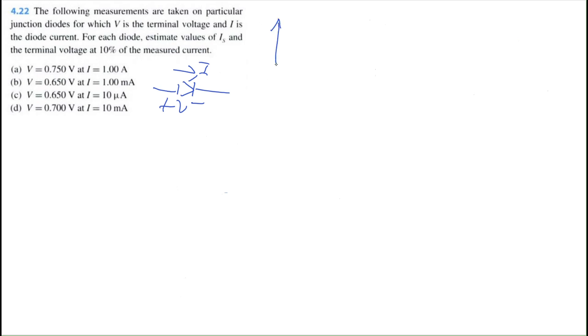We have a diode driving some current I with a terminal voltage V. This problem is really trying to demonstrate the current-to-voltage relationship for a diode. Typically at around 0.7 volts, a diode will start to draw a little bit of current, and as we surpass 0.7 volts, the current will increase exponentially.